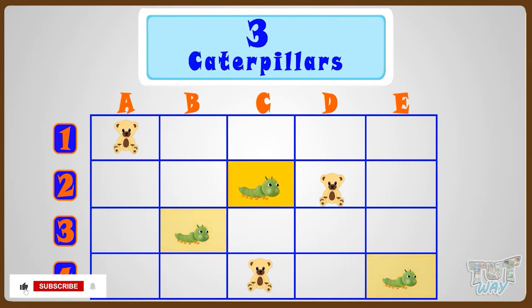One caterpillar is at second row, so 2, and column C. So its name will be 2C. So the position of first toy caterpillar is 2C. The other caterpillar is at third row and B column.